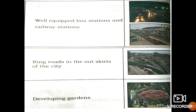Today we have learnt about rural community and urban community, and we have seen the problems faced by the people and what measures the government has taken to solve them. Go through the video to get a clear understanding of the concepts. Thank you.